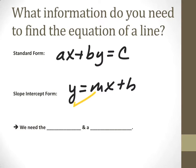What we need is slope, and then we need a point so that we can find b, which is the y-intercept.